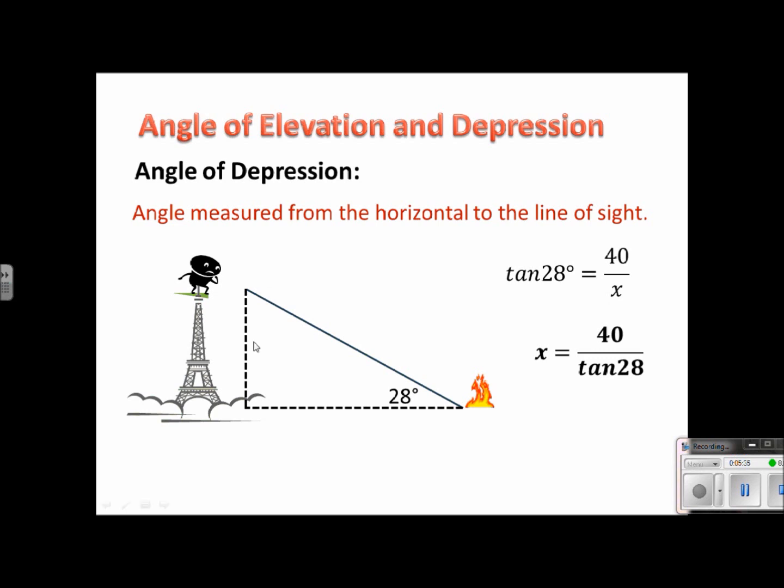And a sure way to get this right is to draw it as the angle of elevation instead. So we could have drawn the same information. We could have drawn it this way and set it up the exact same way and we would come up to the same conclusion. So remember that the angle of elevation and the angle of depression, because we can create those congruent triangles and alternate interior angles are congruent, they are the same thing. I'll see you guys in class.